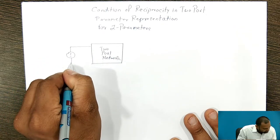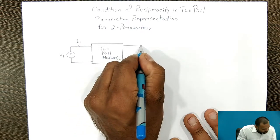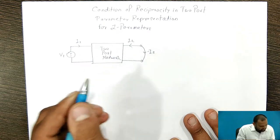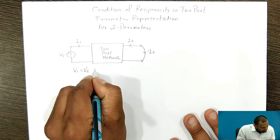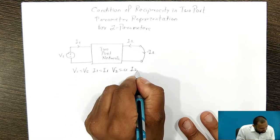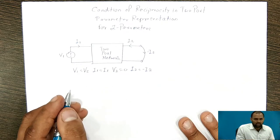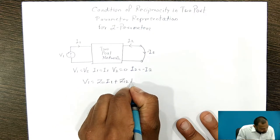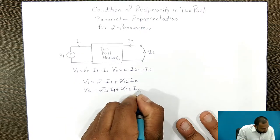Here, the excitation voltage is V1, current is I1, and we have to short-circuit the output. This is current I2, and this is minus I2 because the direction is opposite. So the conditions in this case are: V1 should be considered as Vs, current I1 is I1, voltage V2 is equal to 0, and current I2 is equal to minus I2. First we will write the equations of Z parameters: V1 = Z11·I1 + Z12·I2, and the second equation is V2 = Z21·I1 + Z22·I2.